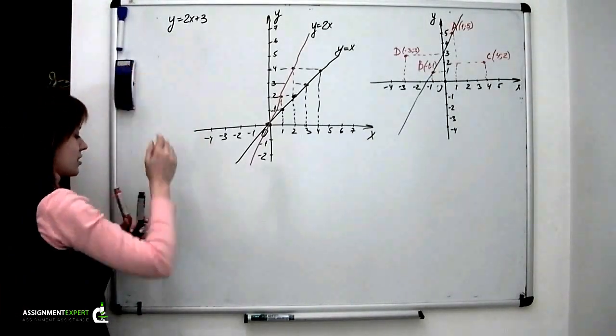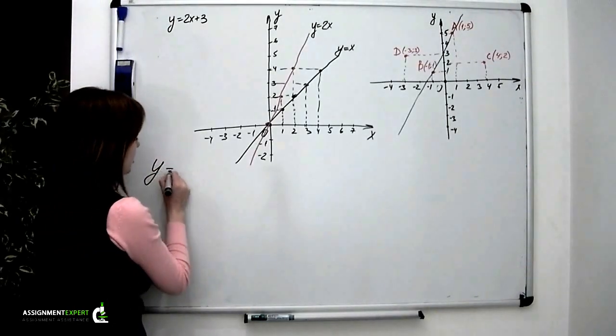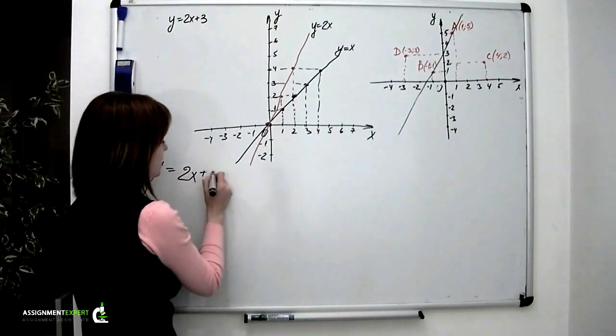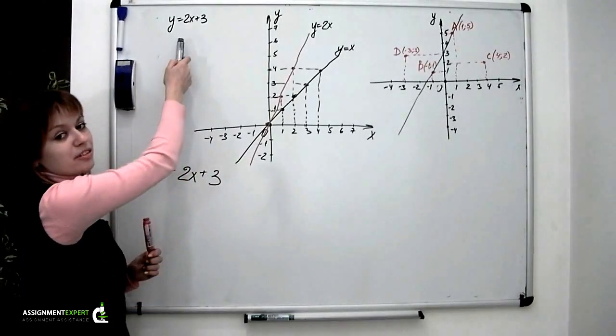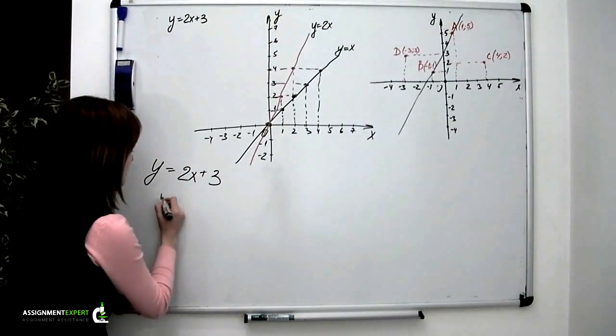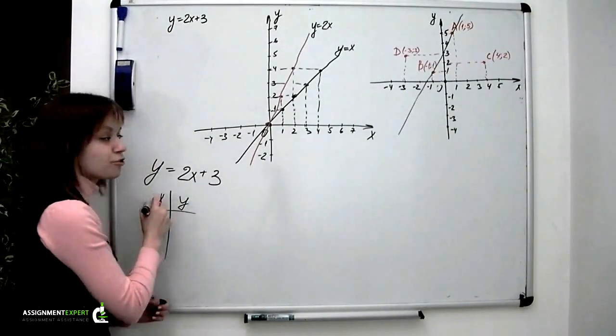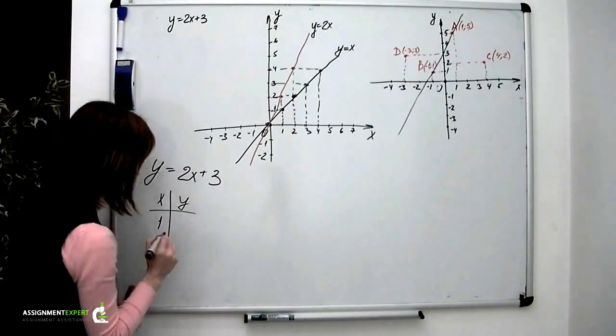And now there is a third example: y equals 2x plus 3, the one we've mentioned above. Now let us graph it. Once again, we need two points to graph a line. We're picking two values for x: 1 and 2.